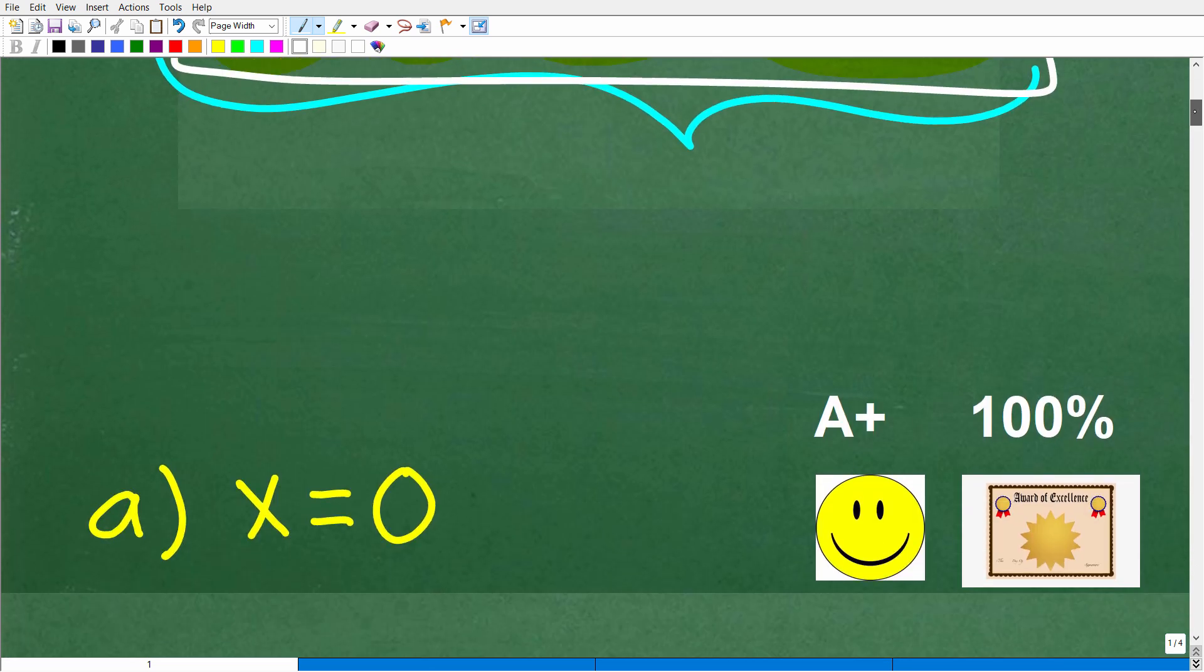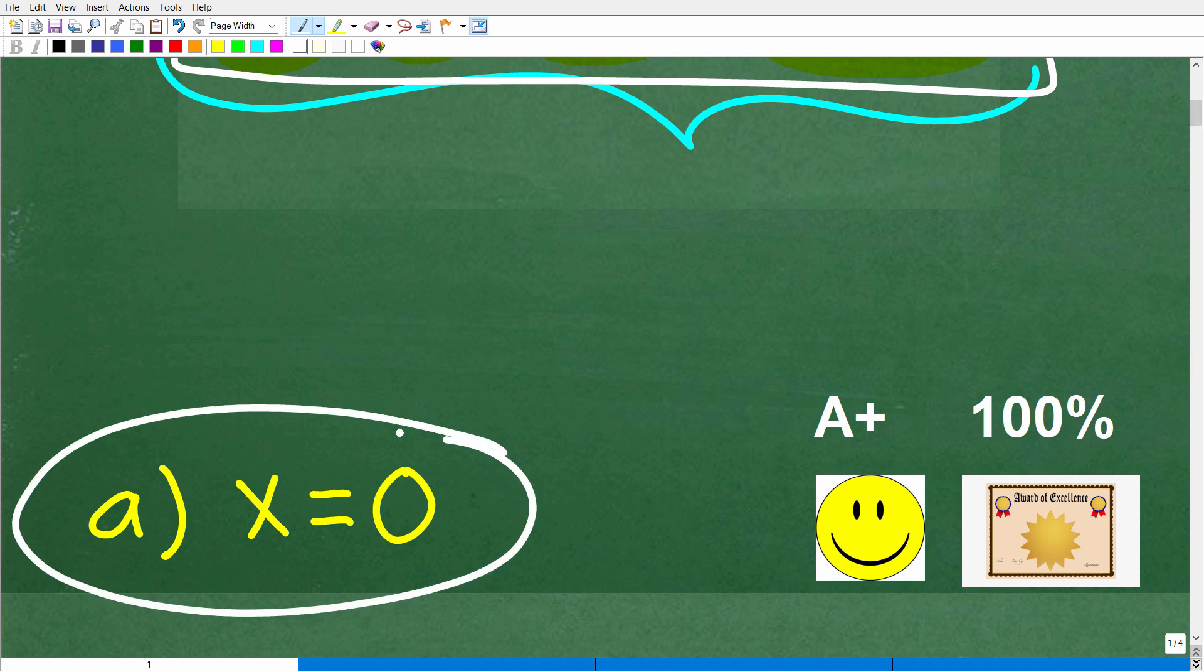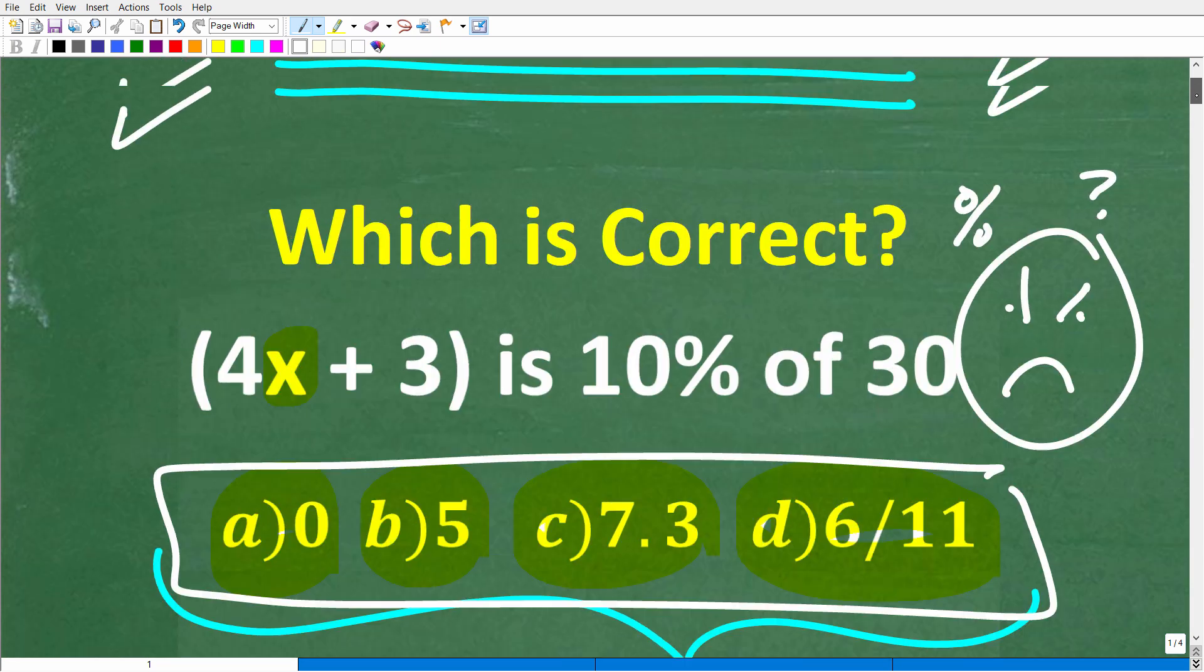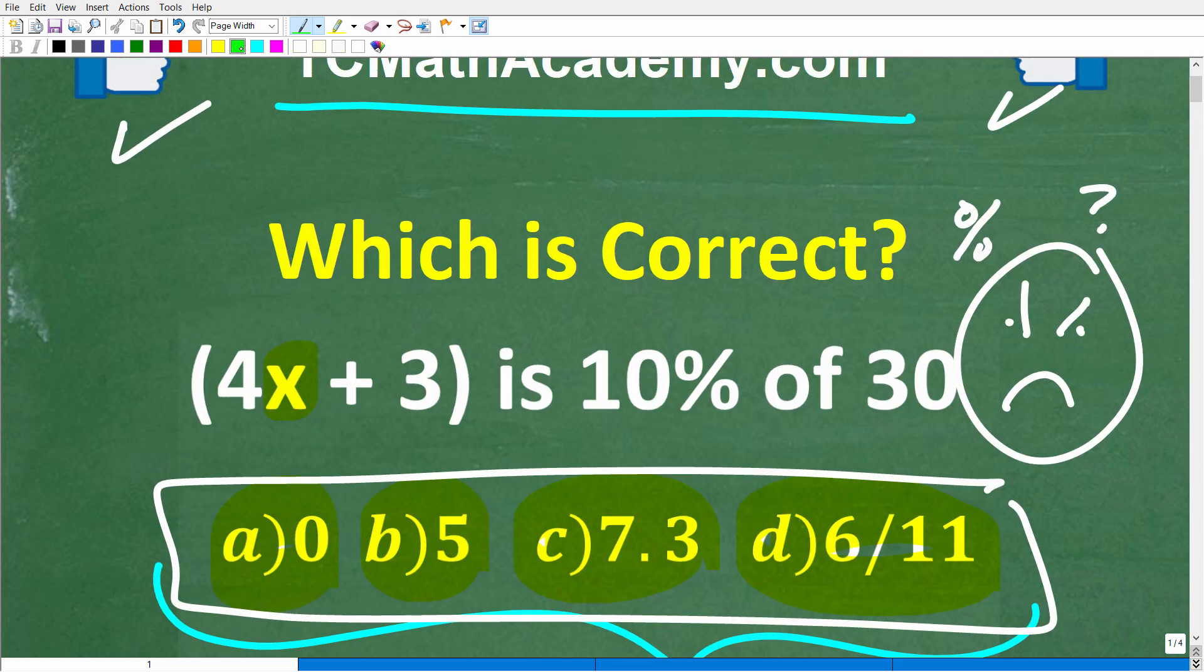The correct answer to this question is A, x is equal to zero. Alright. Now, if you got this right, you definitely get a happy face, an A plus, a 100% and a certificate of excellence because you appear to be a certified professional expert in at least some basic percent concepts. Now, this is an algebra percent problem, but because it's a multiple choice question, you can kind of figure this out. But really, this is not that difficult of a problem, right? But let's go ahead and get into the solution right now.